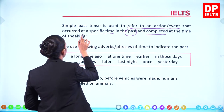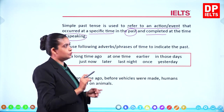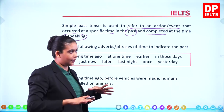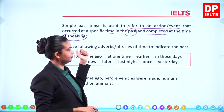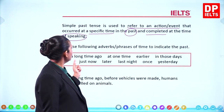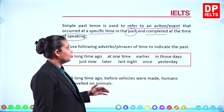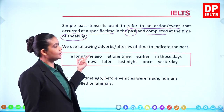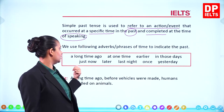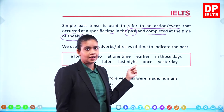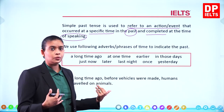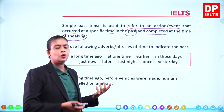You need to understand these keywords: it is used to refer to an action or event at a specific time in the past, and it was completed at the time of speaking. We use the following adverbs or phrases of time to indicate the past: a long time ago, at one time, earlier, in those days, just now, later, last night, once, yesterday.